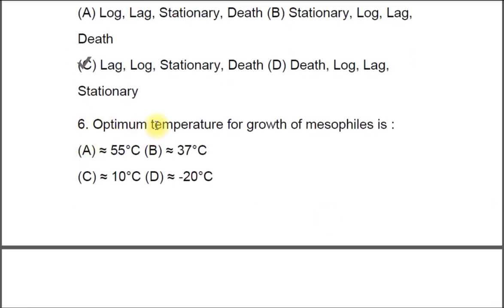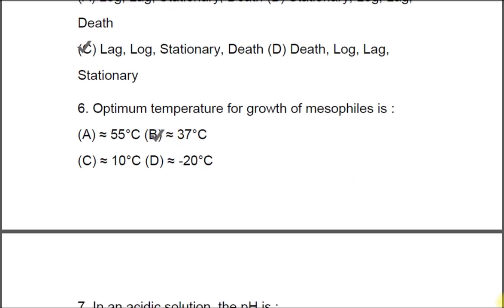Question 6: Optimum temperature for growth of a mesophile is A) approximately 55°C, B) approximately 37°C, C) approximately 10°C, D) approximately minus 20°C. The correct option is B, which is 37°C.